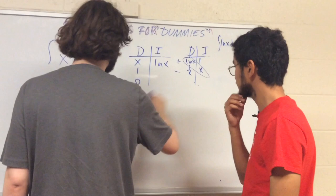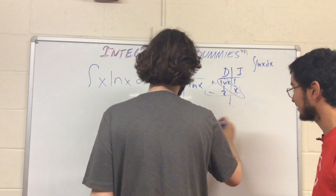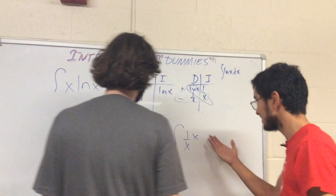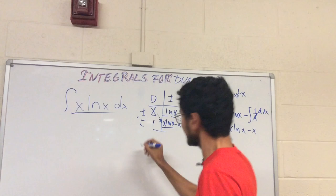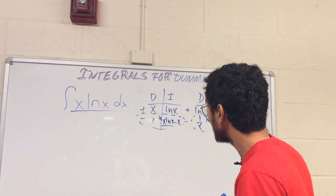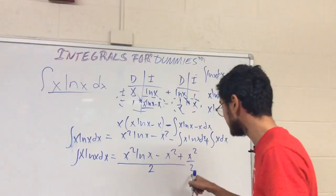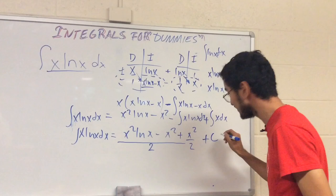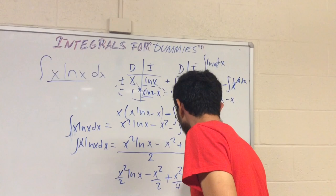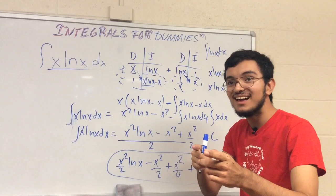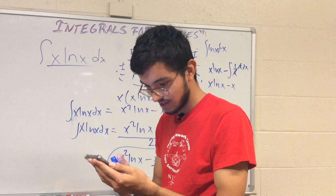So the integral of ln(x) is: ln(x)·x minus the integral of (1/x)·x dx, which simplifies to x·ln(x) minus x. Going back to the DI table, we get x²/2·ln(x) minus x²/4, and don't forget plus C. So in total the answer is x²/2·ln(x) − x²/4 + C.